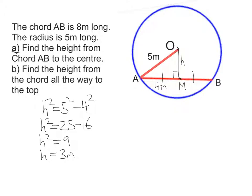To get the height from the chord all the way to the top, I need to add this distance here. The distance from the center to the edge. Well, the distance from the center to the edge is a radius. So this distance here is 5 meters.